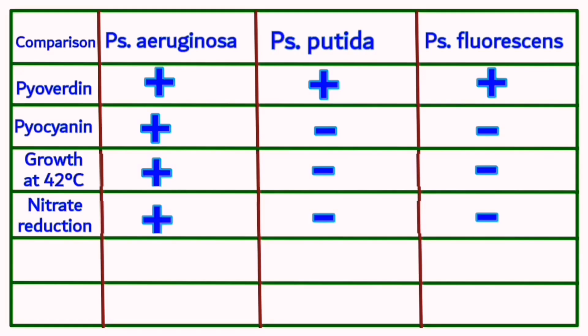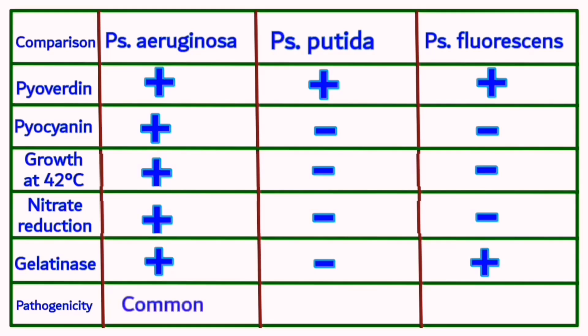To differentiate between Pseudomonas fluoresens and Putida, a gelatin hydrolysis test can be used. In this test, only P. fluoresens will be positive due to the production of a gelatinase enzyme, which results in liquefaction of the test medium. Pseudomonas aeruginosa is the most dangerous species to infect humans, as both Fluoresens and Putida rarely cause infections.